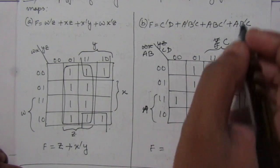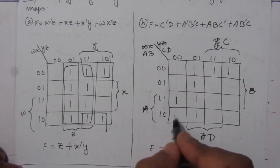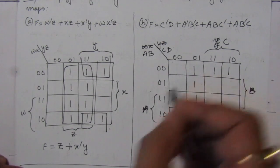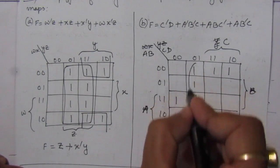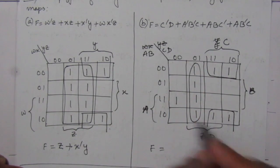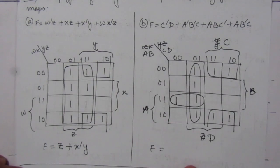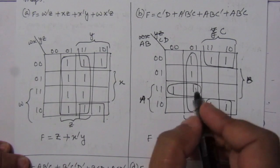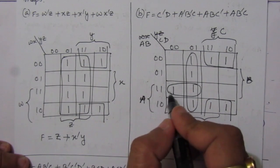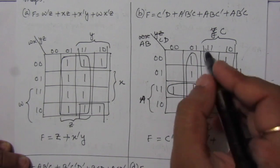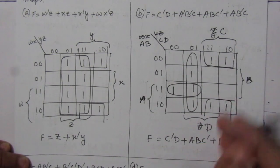The fourth term is AB-bar C: AB-bar is the fourth row, and C value is one for the last two columns. Now we combine: first combination is this group, second combination is this group, and the third is this group. After simplification, f equals C-bar D, plus from this term A B C-bar, plus from this term B-bar C.